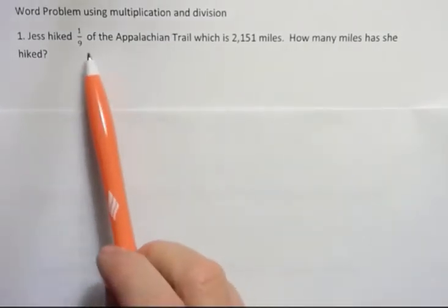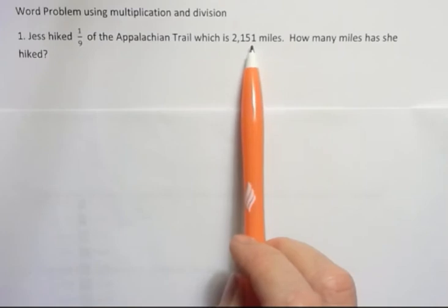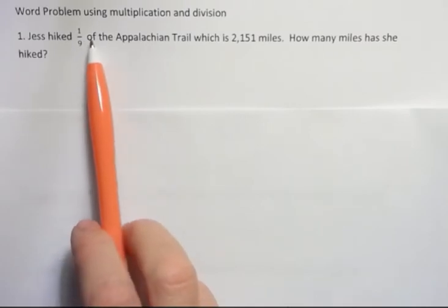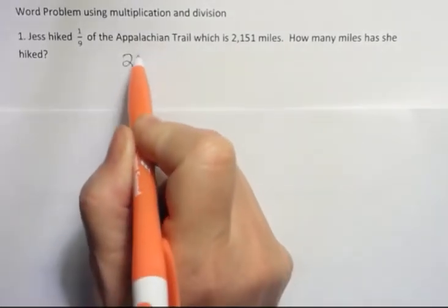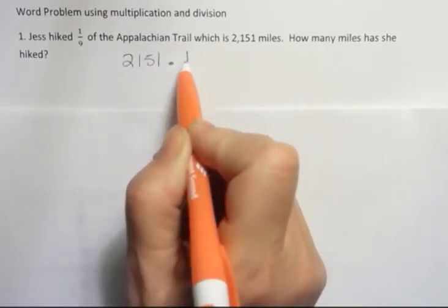So Jess hiked one-ninth of the Appalachian Trail, which is 2,151 miles. How many miles has she hiked? Well, when you want to know one-ninth of something or one-fifth of something, whatever that is, the 'of' is asking us to multiply. So we're going to take 2,151 and we're going to multiply by one-ninth.